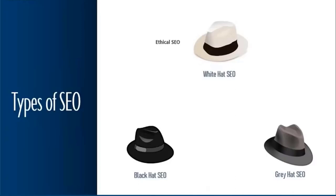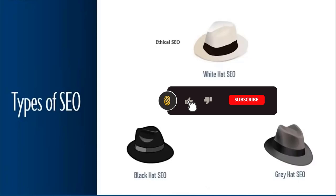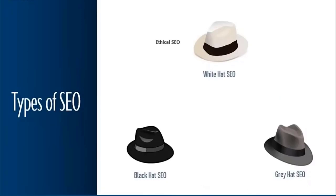Hidden text examples include using white text on a white background, locating text behind an image, or setting font sizes to zero. Other Black Hat practices include automatically generated content, and doorway pages — pages which bait users with a well-optimized high-ranking page but quickly redirect them to unrelated pages. Though there may be some short-term success, Google algorithms are getting more sophisticated and can penalize your search, resulting in devastating effects on your rankings. Your website can get de-indexed from Google.